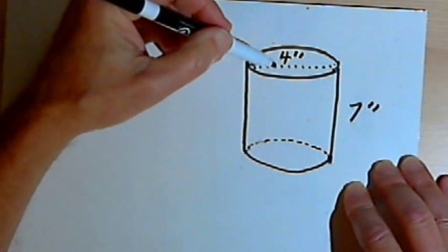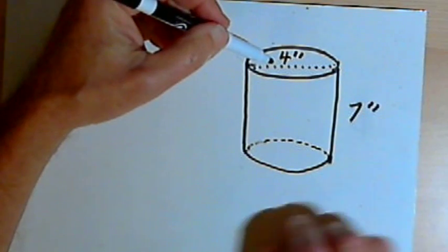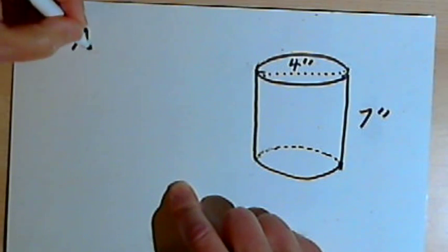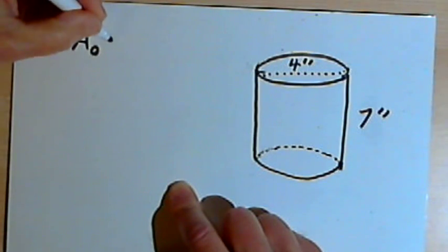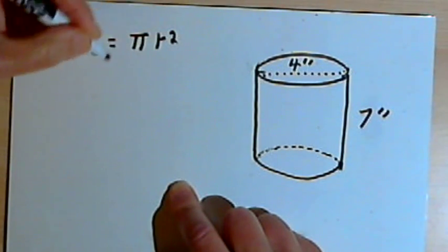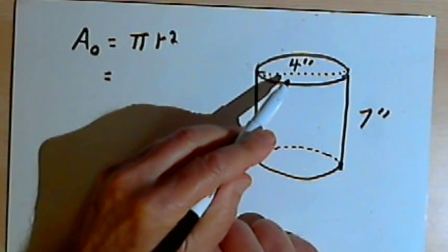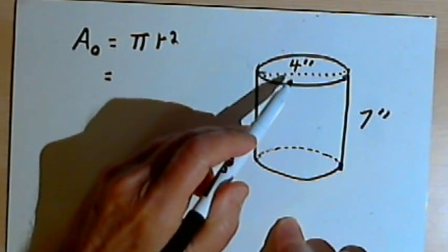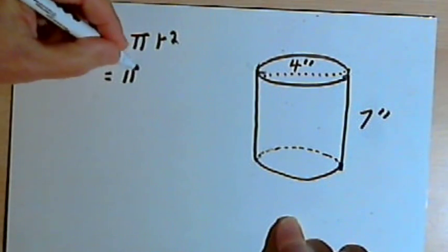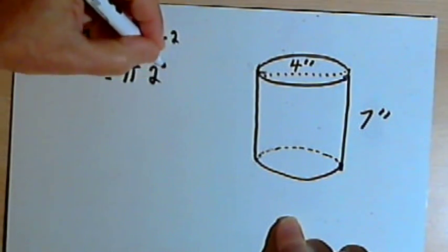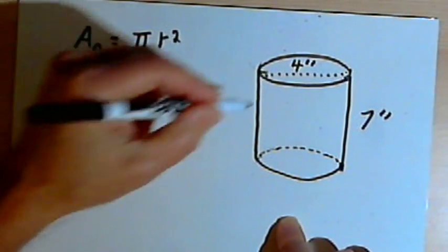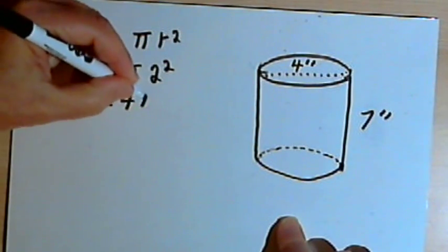So we're going to have to find the area of the base. That means we need the area of the circle. So the formula for the area of the circle is pi times the radius squared. We're not given the radius, we're given the diameter. But remember, the radius is one-half the diameter. So that means we're going to have pi times 2 squared. 2 squared is 4. So the area of each of the bases is going to be 4 pi.